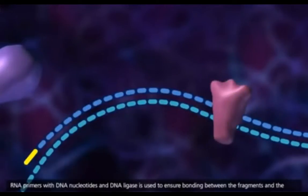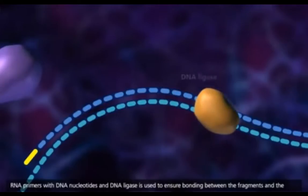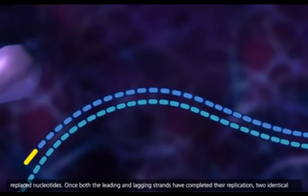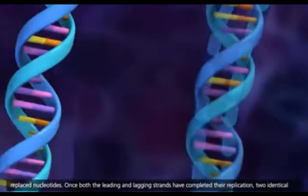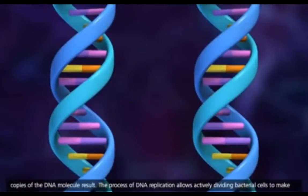DNA polymerase 1 replaces the RNA primers with DNA nucleotides, and DNA ligase is used to ensure bonding between the fragments and the replaced nucleotides. Once both the leading and lagging strands have completed their replication, two identical copies of the DNA molecule result.